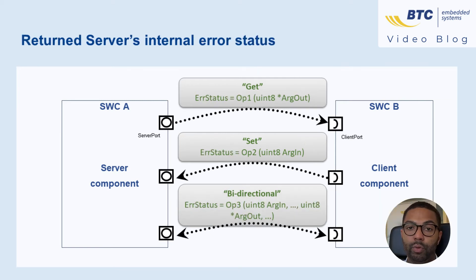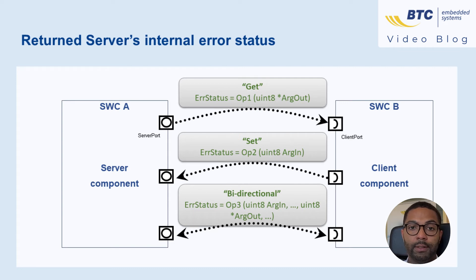In addition to the operation arguments, the server can return a status with a potential error in case it encounters an internal problem.